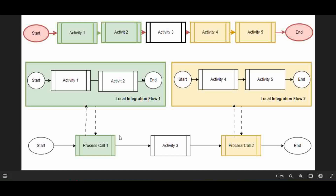An important additional feature of Process Call is that you can iterate it — meaning you can call the local integration flow a definite number of times, looping it. I'm going to split this into two separate videos: this video explains a simple Process Call calling a local integration flow and returning, and the next video will cover how to repeatedly call the same local integration flow a defined number of times. In this section I'll explain dividing the iflow into modular sections and calling each module by the Process Call palette.